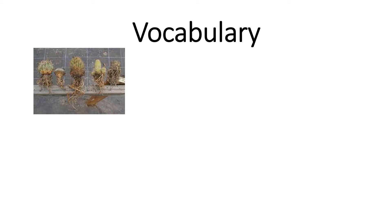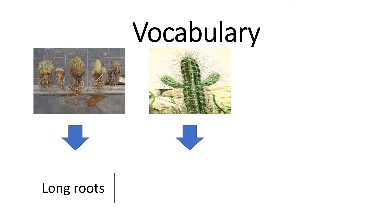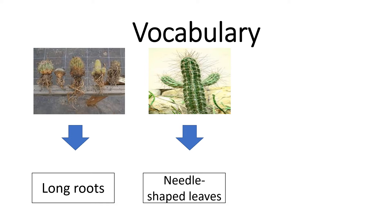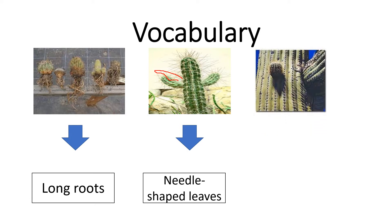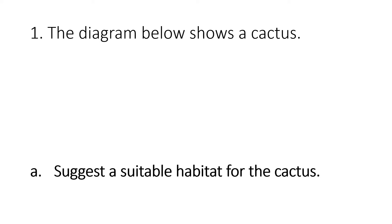Let's start. Here are the vocabulary words we're going to use in today's activity. First, we have long roots — cactus has long roots. Next, needle-shaped leaves, because of their spikes. As you can see, the spikes look like needles, so they are called needle-shaped leaves. And thick stem — a very big, thick stem. So again: long roots, needle-shaped leaves, thick stem.